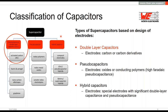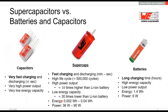For supercapacitors at Würth Electronics, we use activated carbon as the electrode material. When you change the design of the electrodes, you also get different capacitor types like pseudo and hybrid capacitors.